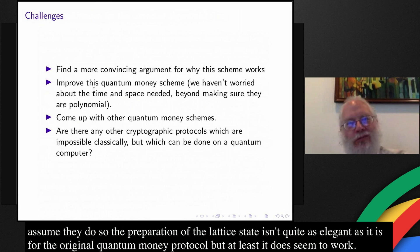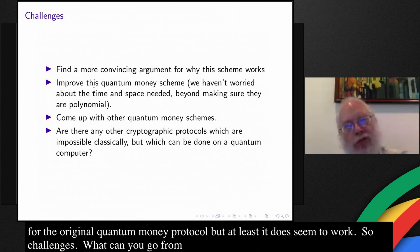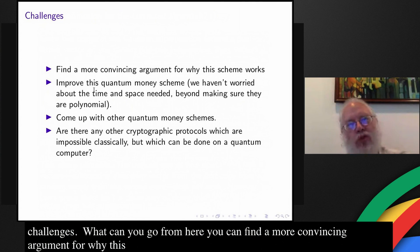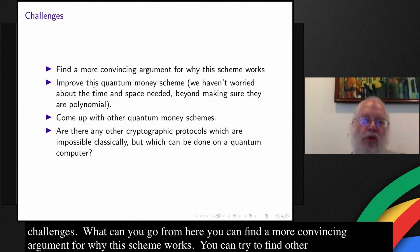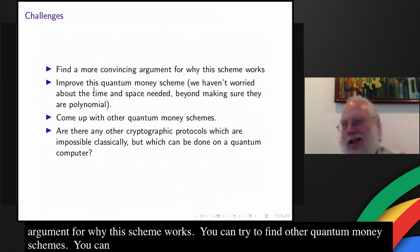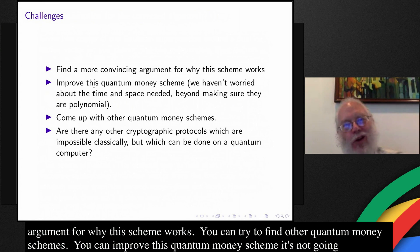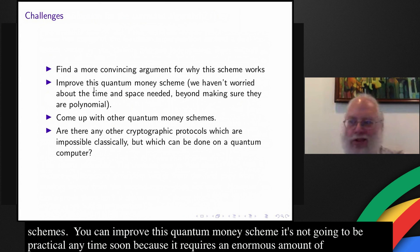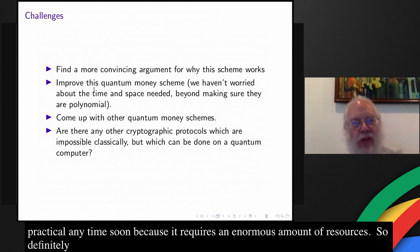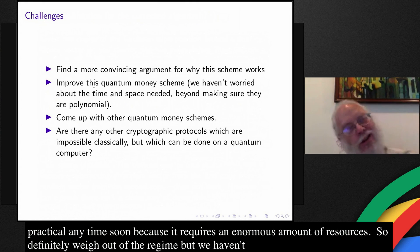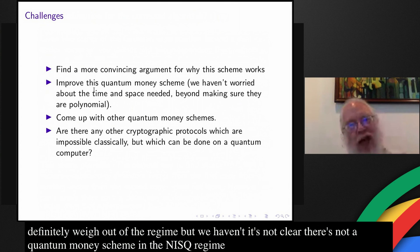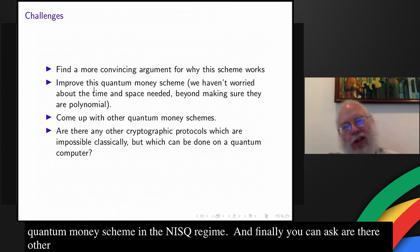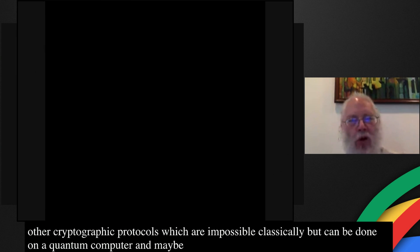So, challenges — where can you go from here? You can find a more convincing argument for why this scheme works. You can try to find other quantum money schemes. You can improve this quantum money scheme, though it's not going to be practical anytime soon because it requires an enormous amount of resources — definitely way out of the NISQ regime. But it's not clear that there's not a quantum money scheme in the NISQ regime. And finally, you can ask: are there other cryptographic protocols which are impossible classically but which can be done on a quantum computer, and whether the same techniques can be used to construct them.